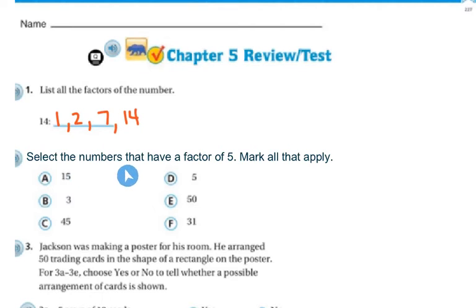Number 2 says to select the numbers that have a factor of 5 and mark all that apply. If it's got a factor of 5, then we know it's going to end in 5 or 0. So 15 ends in 5, 3 does not, 45 ends in 5, 5 ends in 5, 50 ends in 0, 31 does not. So those are all the numbers that have a factor of 5.